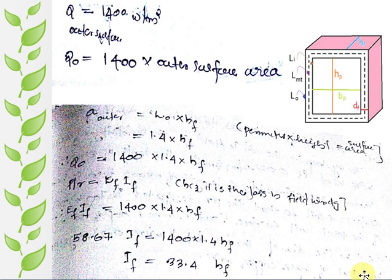For that, it is given that copper loss per one meter square is 1400. Then total copper loss is this into total outer surface area. Total surface area is L0 into hf. Then we will get an equation like this. There is another equation for copper loss: that is Ef into If. Equate these two equations.